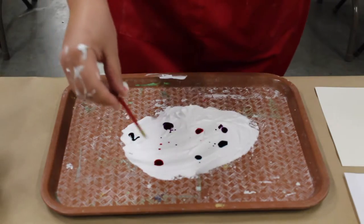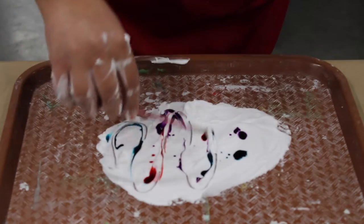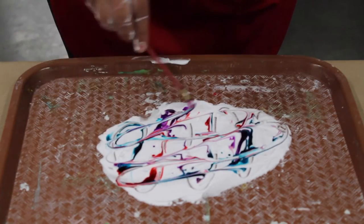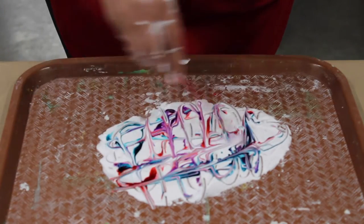Next you're going to take your watercolor brush. We're going to use the end of this and use this as kind of like a mixing tool. We just move it around. You want to cross through as many lines as you can. You're going to see it's going to start to make a pattern.